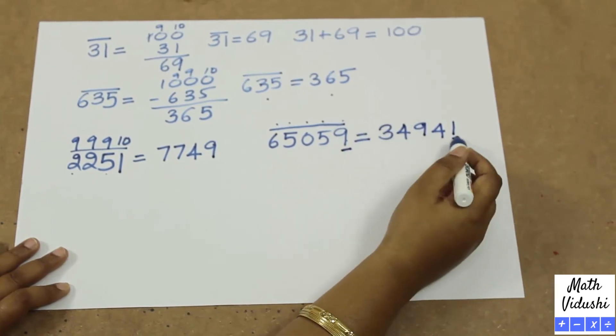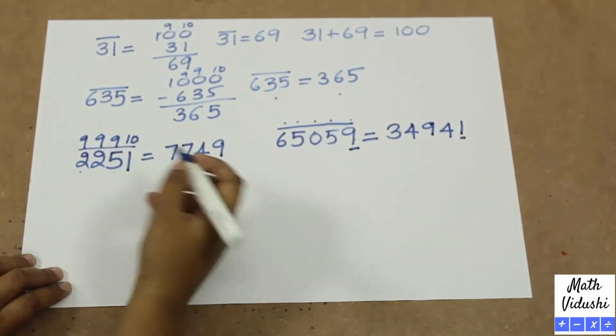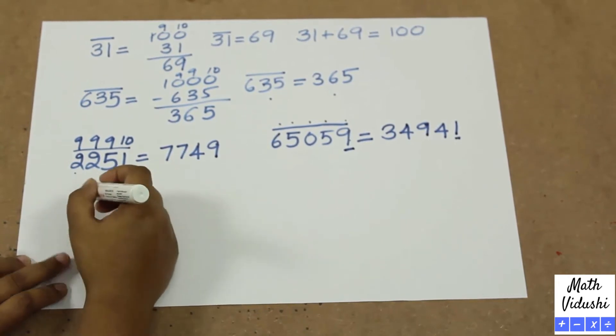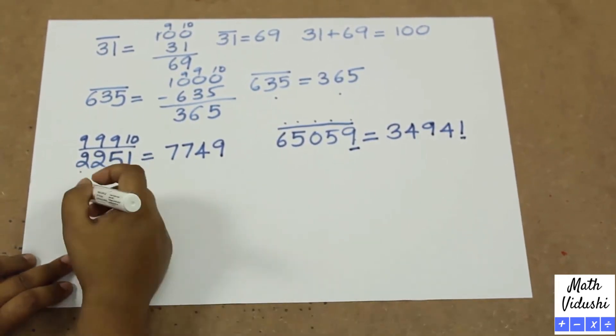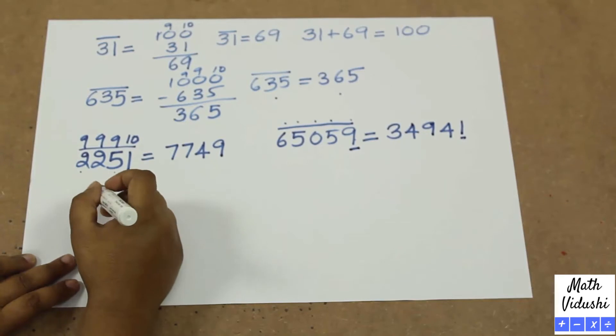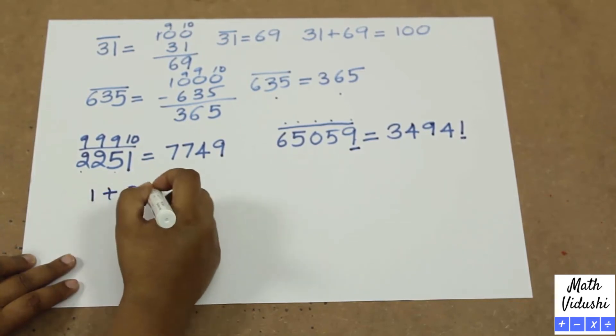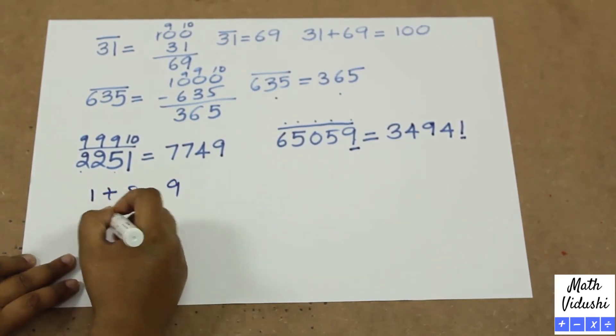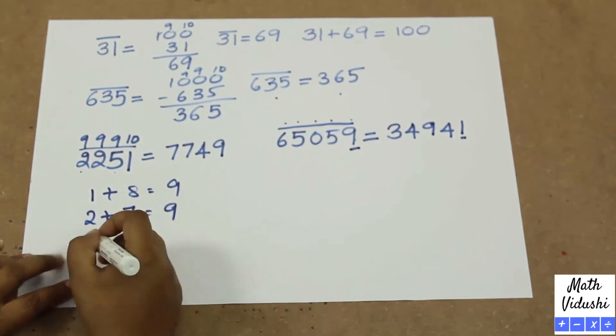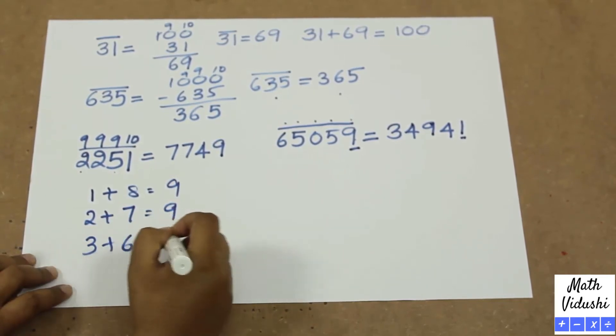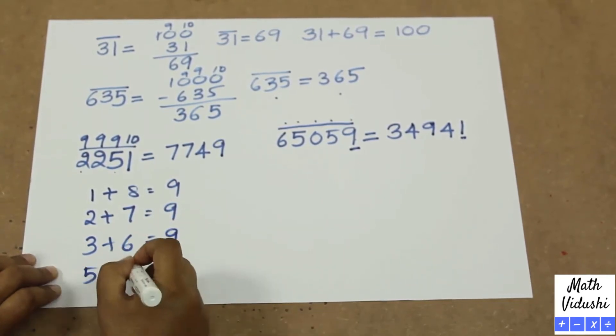You should remember that all the complements of each number from 9. It's very easy. 1 plus 8 equal to 9. 2 plus 7 equal to 9. 3 plus 6 equal to 9. 5 plus 4 equal to 9. 9 plus 0 equal to 9.